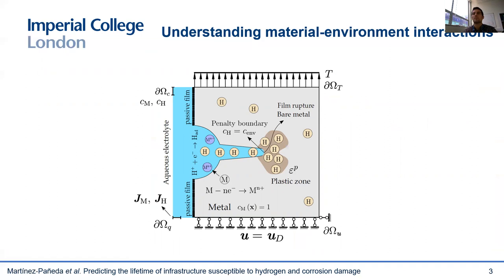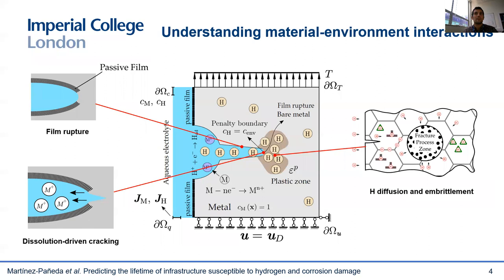Of course, the specific mechanisms at play depend on the material and the environment being considered, but factors that can govern material behavior include the transport of species, passivation and rupture of the passivation film, metal dissolution, mechanical straining, hydrogen ingress and diffusion within the crystal lattice, metal embrittlement, and so on. So the physical picture is complicated, and thus the development of predictive models is challenging.